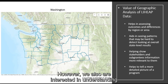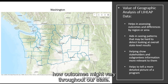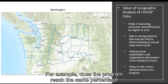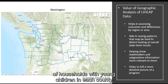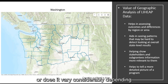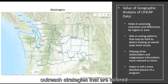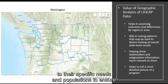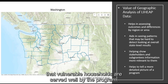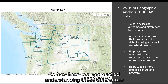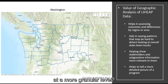This information provides a great starting point for understanding how well our program reached these vulnerable populations from a statewide perspective. However, we are also interested in understanding how outcomes might vary throughout our state. For example, does the program reach the same percentage of households with young children in each county, or does it vary considerably depending on which county you live in? Understanding whether and where there are differences is critical for helping local agencies identify effective outreach strategies tailored to their specific needs and populations.